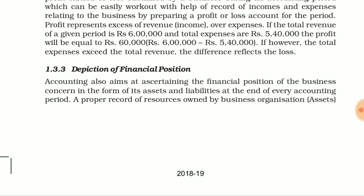What is your financial position? It is also an objective of accounting. Accounting also aims at ascertaining the financial position of the business, expressed in the form of assets and liabilities at the end of every accounting period. After every accounting period, you prepare a statement of assets and liabilities — which we call a balance sheet — and through that you try to check what your financial position is.